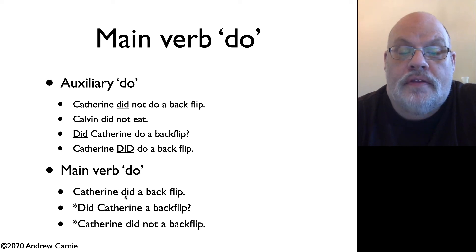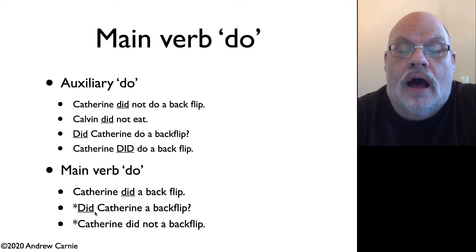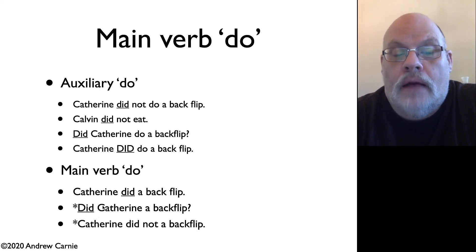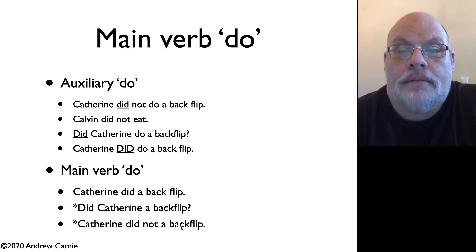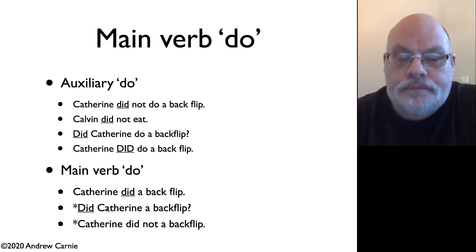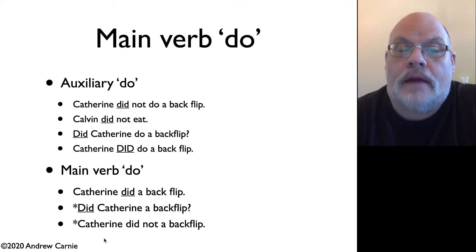Notice that this main verb do cannot undergo subject-auxiliary inversion. You can't say 'Did Catherine a backflip?' or 'Catherine did not a backflip' — at least in American English, the second sentence is ungrammatical, and 'Catherine did not a backflip' is terrible in all dialects. So main verb do does not appear before negation and does not undergo subject-auxiliary inversion, telling us it's a different character altogether.